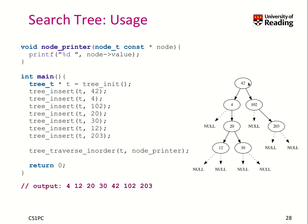Let's look at this again. We start with the in-order traversal: we go to the left, nothing to do, so we print 4. Then we go to the right, go to the left, go to the left, nothing to do — we print 12, go to the right, nothing to do. We go from here to the right, go to the left, nothing to do, we print 30. And you can see that it basically does a very nice sorting for us.